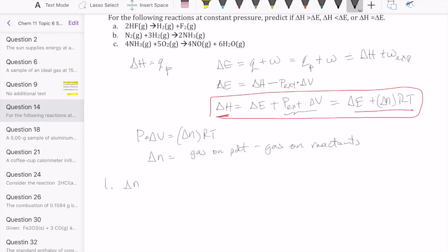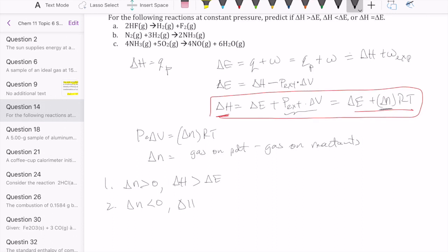If delta N is positive, that means you're going to add to your delta E some positive number, which means your delta H is going to be bigger than your delta E. If your delta N is negative, you're going to subtract something from your delta E, so your delta H is going to be less than your delta E.